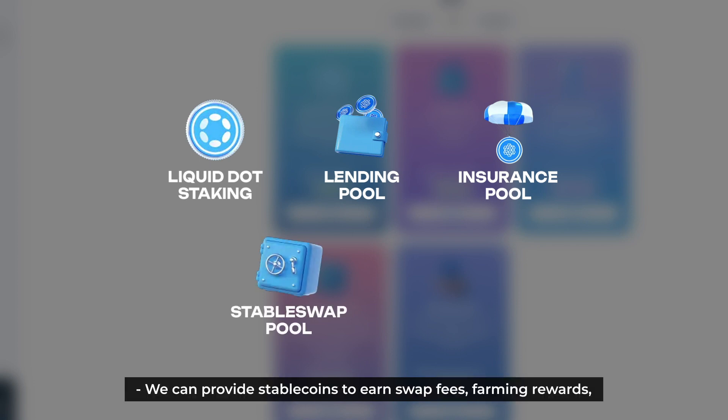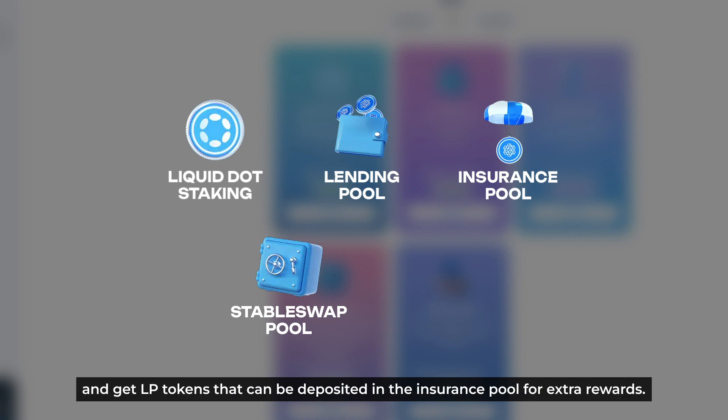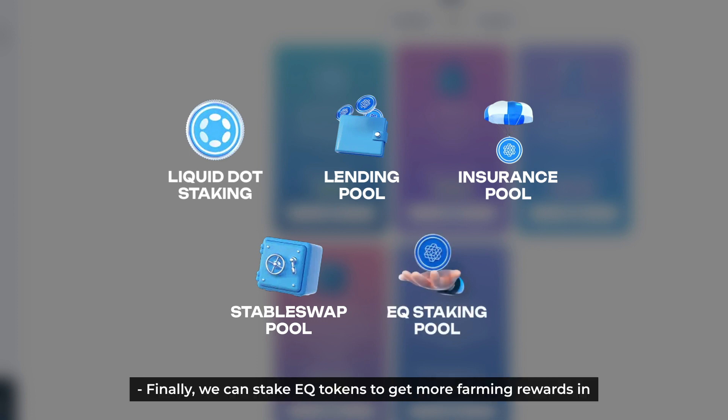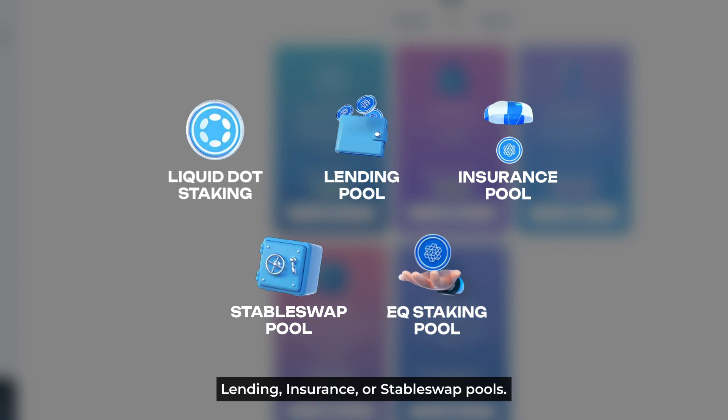StableSwap Pool: we can provide stablecoins to earn swap fees, farming rewards, and get LP tokens that can be deposited in the insurance pool for extra rewards. EQ Staking Pool: finally, we can stake EQ tokens to get more farming rewards in Lending, Insurance, or StableSwap pools.